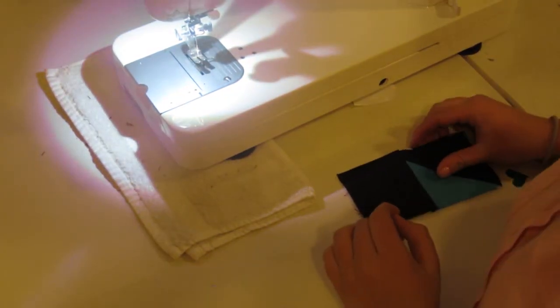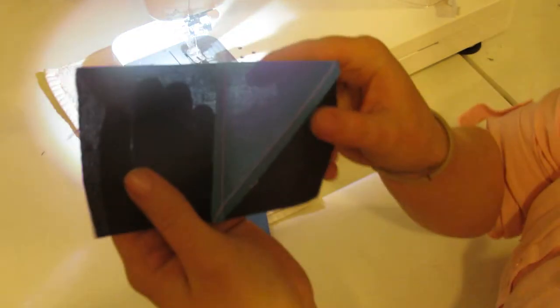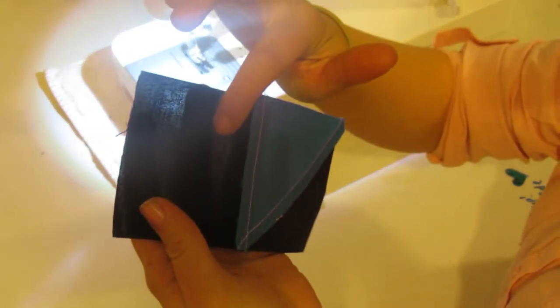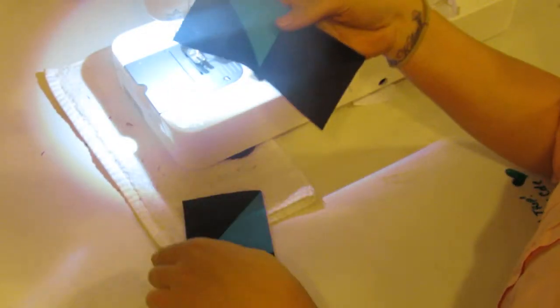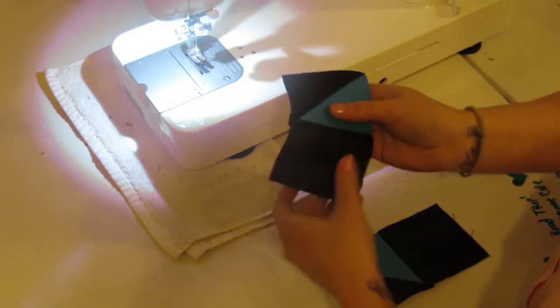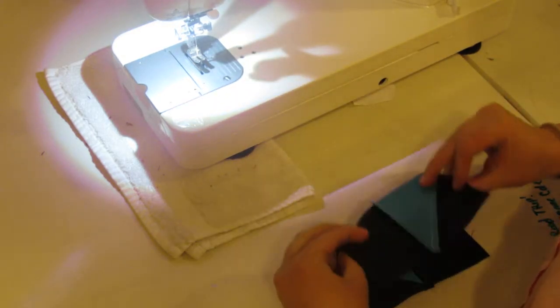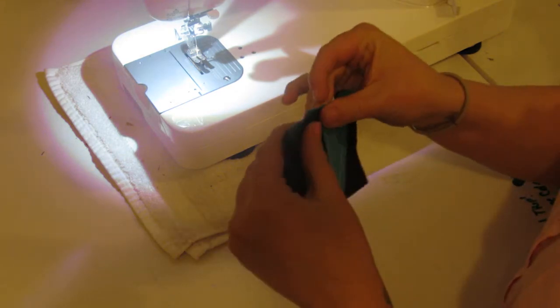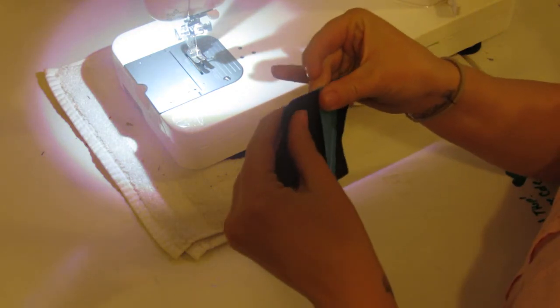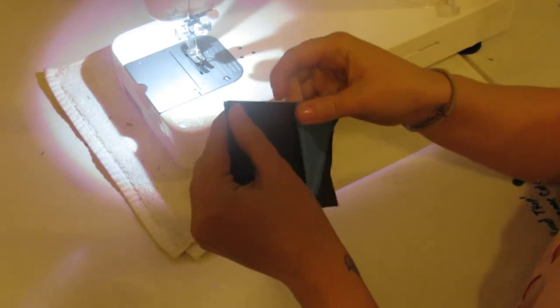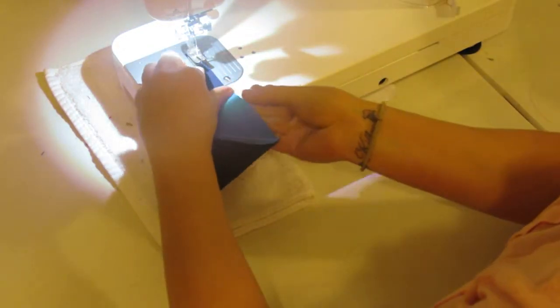Now after pressing them, I did press the seams over towards the solid dark blue square just because there was less bulk over there. And that means that these are going to be opposite, helping us nest our seams together. So now we're just going to flip these two onto each other, nest up our seams real nice, and sew a quarter inch seam down that side.